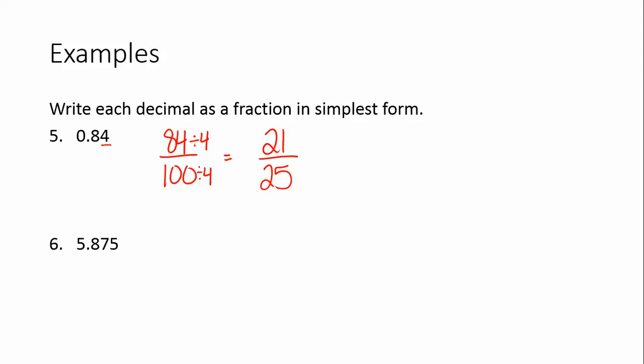Example 6, we have 5 and 875 thousandths, if you want to read it that way. Some people read it as 5.875. We're going to ignore the whole number for a moment and focus on the decimal. That 875 ends in the thousandths place. So it needs to be divided by a thousand. When you start your division, you can start with the simplest one you know. They are both divisible by 5. They're also both divisible by 25. So I'm going to start there with 25.